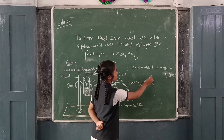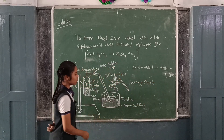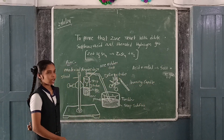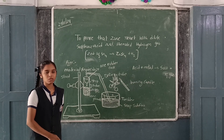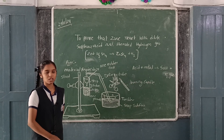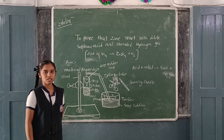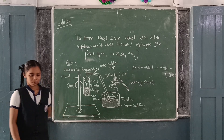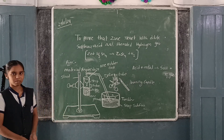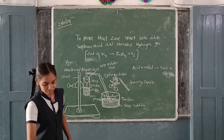Conclusion: From this activity, we conclude that acid reacts with some active metals and liberates hydrogen gas. Acid turns blue litmus red. Thank you.